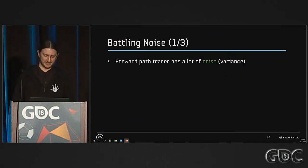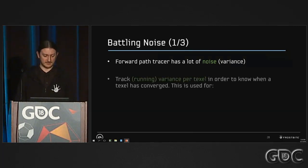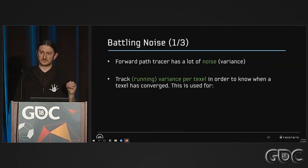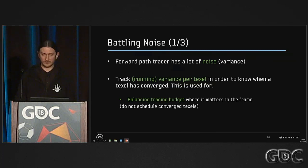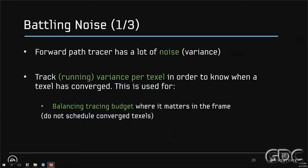Flux is a forward path tracer, so it's subject to noise due to complex scenes, complex paths, and complex light sources. To fix that, we track the running variance per texel of the light map we are evaluating. That's used for different things — to balance the budget first, because if we know a texture has converged, we don't need to schedule it. We know it has converged, so we can skip it for preview.